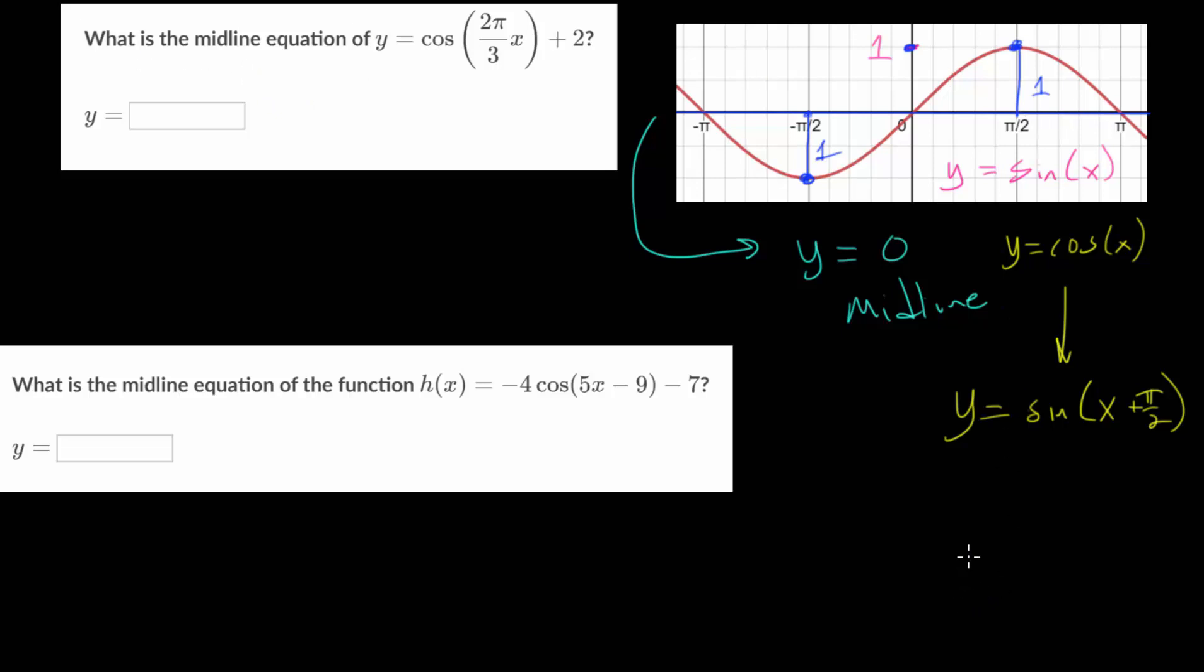What we saw in a previous video is that if we have some function, let's say f of x, and we add some constant h to this, this will essentially take our function f of x, let's say this is what it looks like, and it will shift it up h units, meaning every point on this curve will now be h units higher.